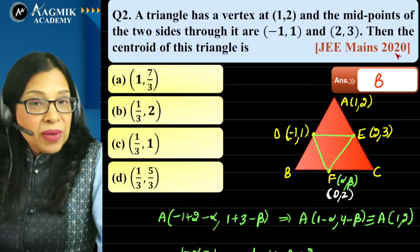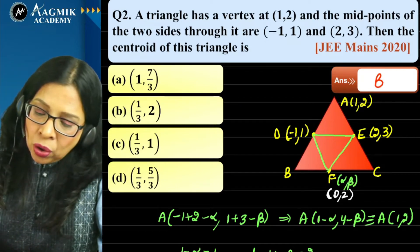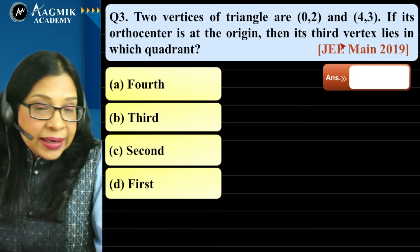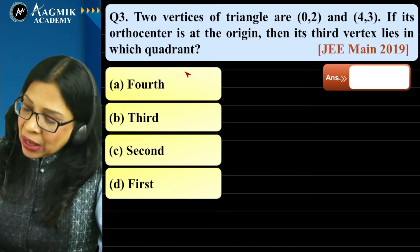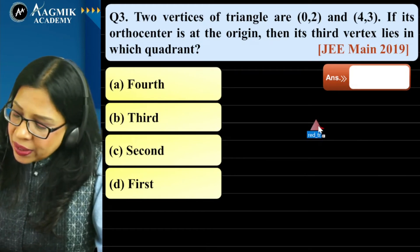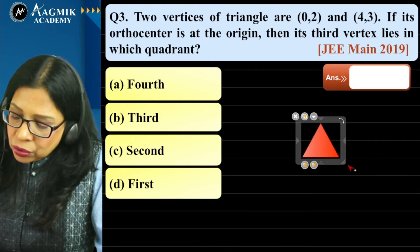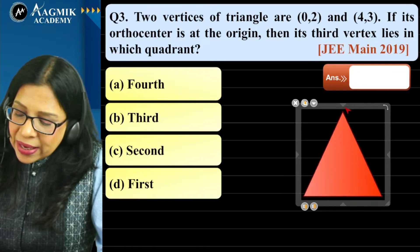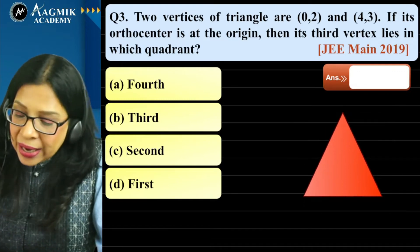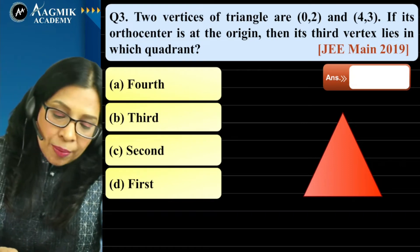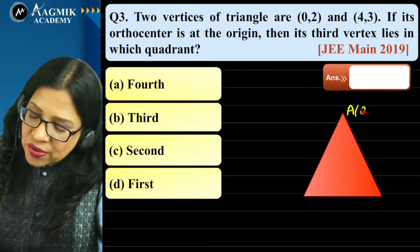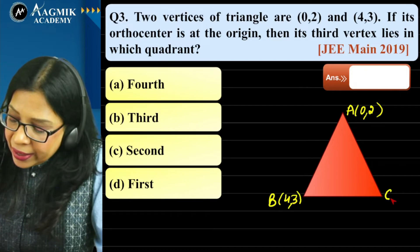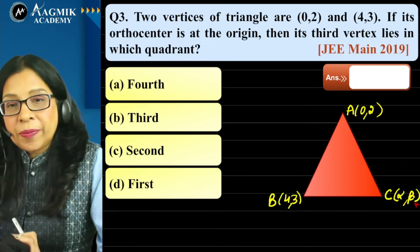Question 3: Two vertices of a triangle are given as A(0, 2) and B(4, 3). The orthocenter is at the origin. Find in which quadrant the third vertex C(α, β) lies. Let the altitudes meet at H = (0, 0). Use AH ⊥ BC and BH ⊥ AC.